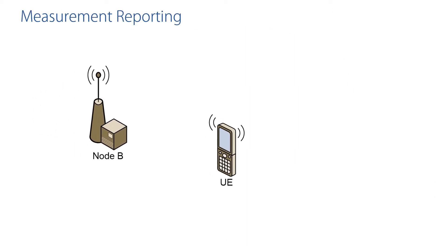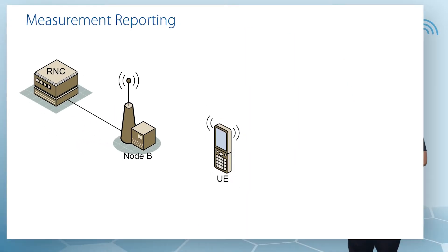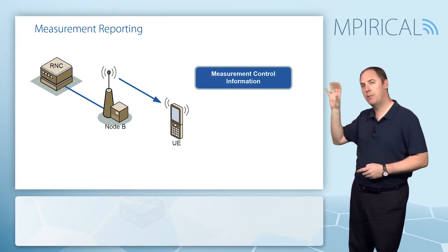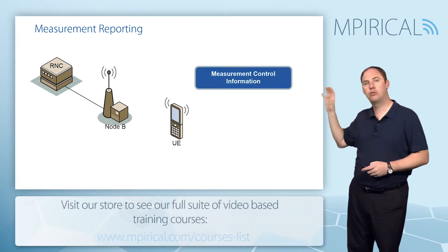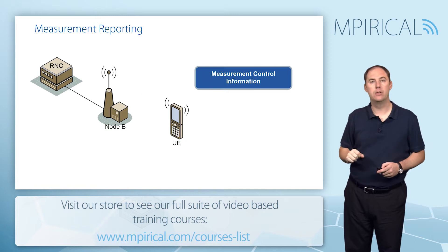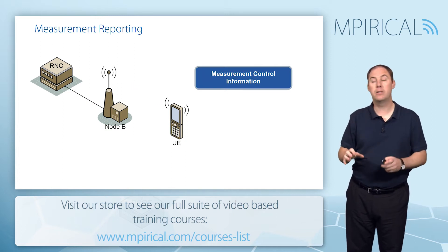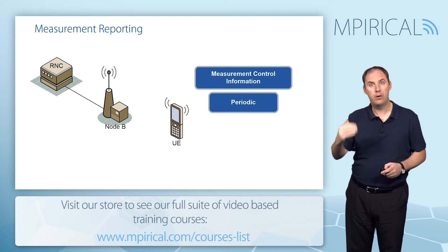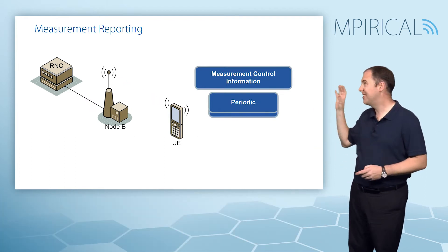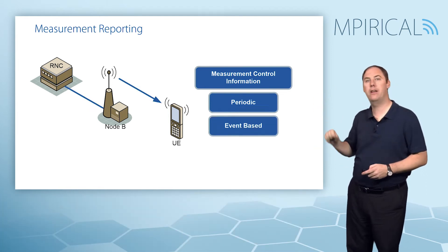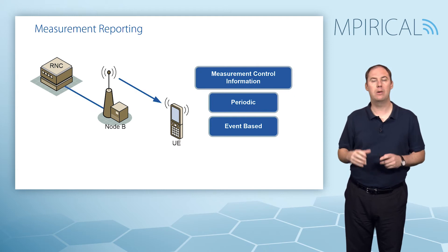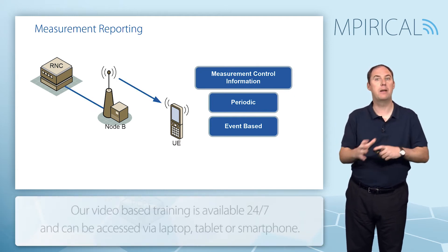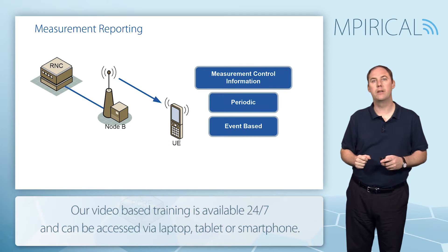In order to facilitate mobility, we need to get reports from the mobile. We do this by sending measurement control information from the RNC to the mobile. The RNC will ask the mobile to perform measurements — either periodic measurements, so periodically send a measurement report, or typically for soft handovers, event-based triggers. For example, tell me when this cell is better than that cell and the measurement report will be sent.